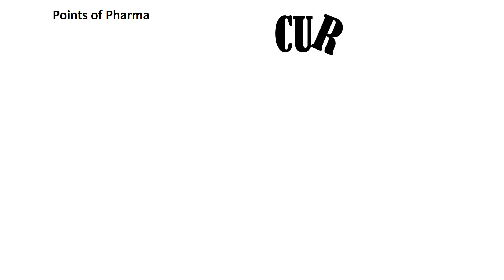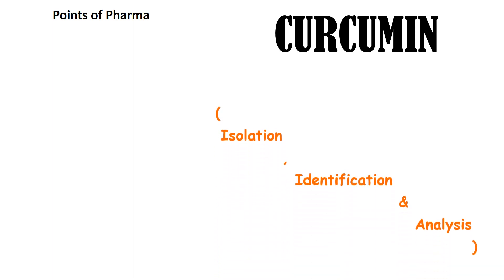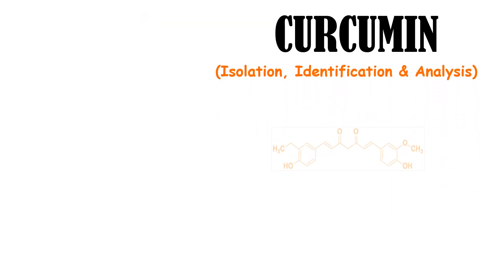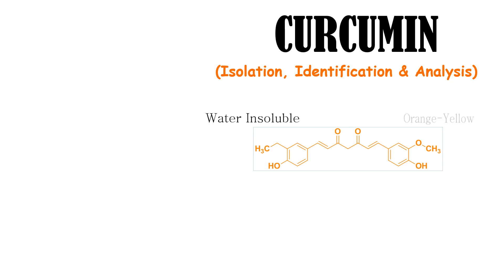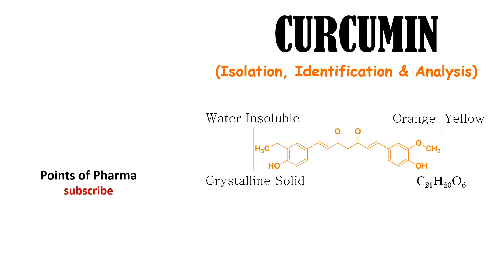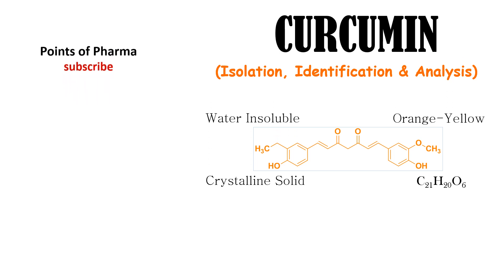Hello everyone, welcome to Points of Pharma. Today the topic is curcumin — more accurately, the topic is isolation, identification, and analysis of curcumin. Curcumin is water insoluble, orange-yellow crystalline solid of molecular formula C21H20O6.